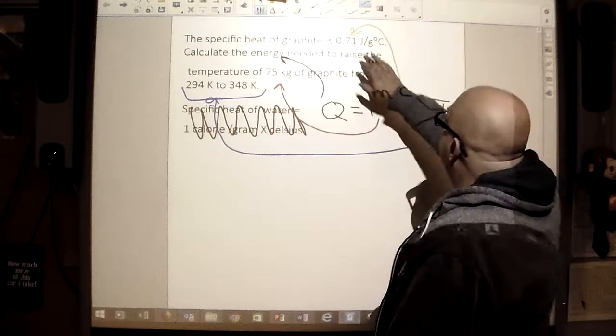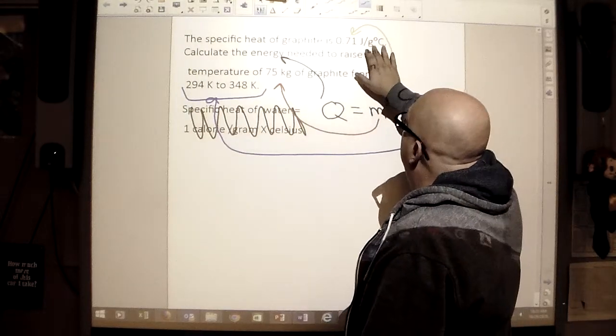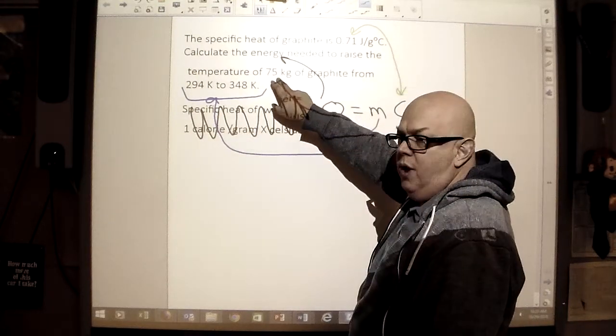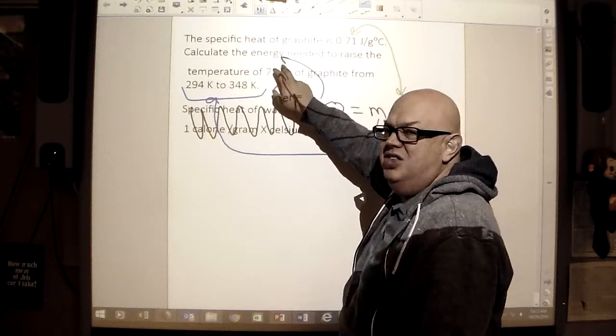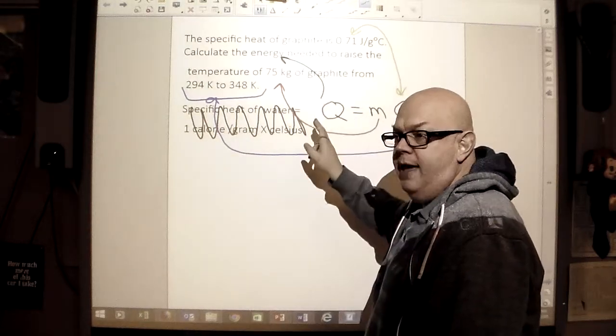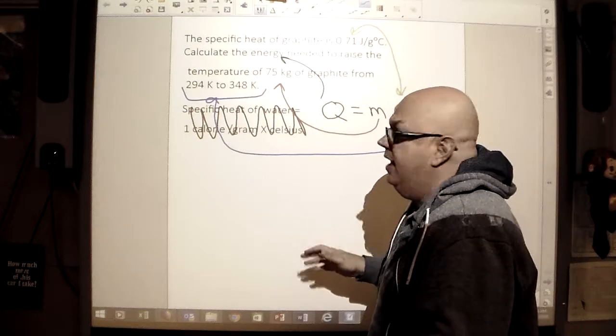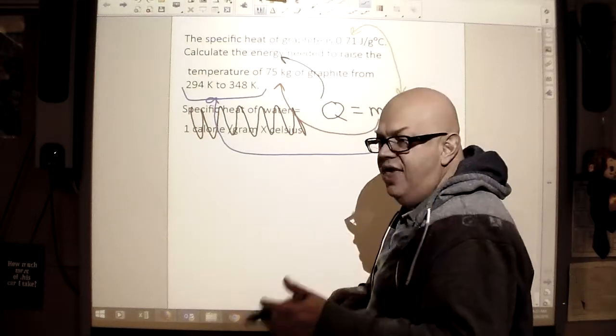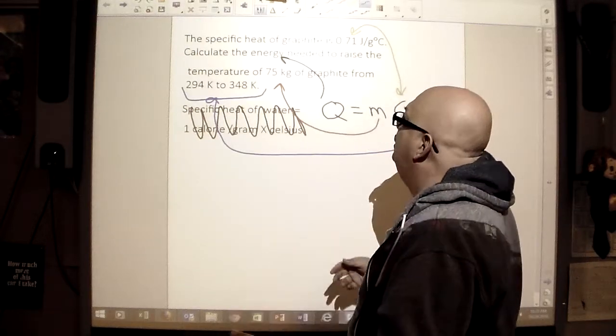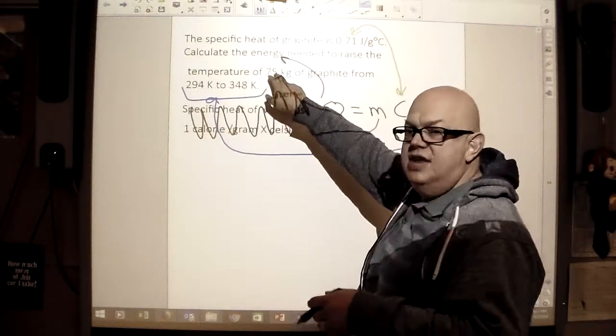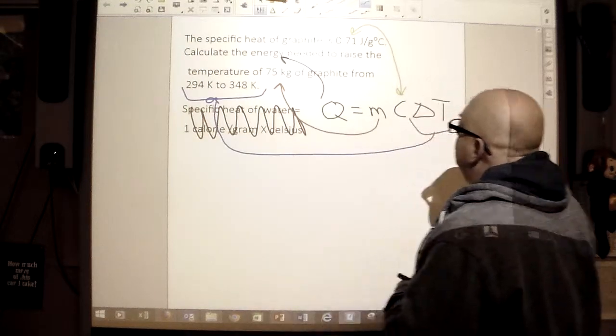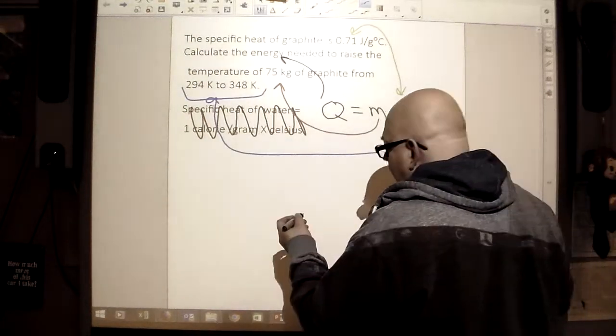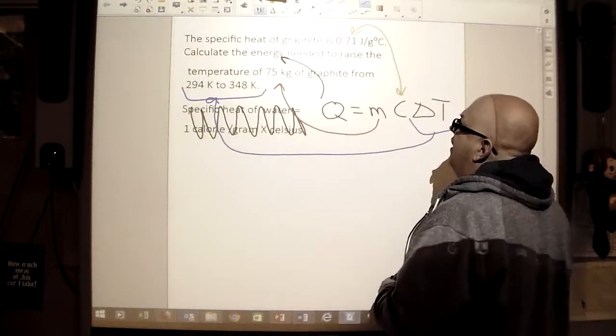We see joules per gram here. Here we have kilogram. So what we're going to need to do, we're going to need to change this from kilograms to grams. How do we do that? Well, it's 1,000 grams equals 1 kilogram, so that's going to be easily 75,000 grams. So we know that our mass would be 75,000 grams.